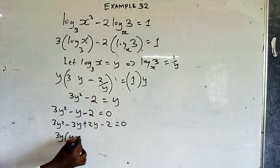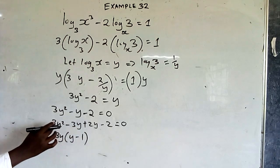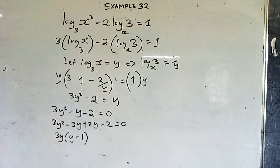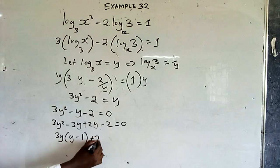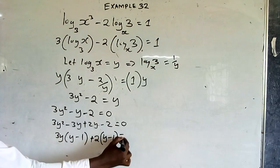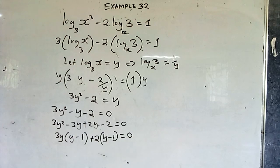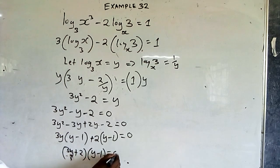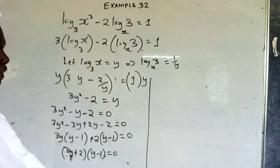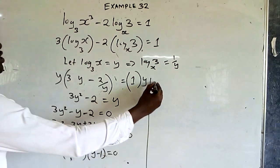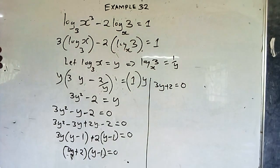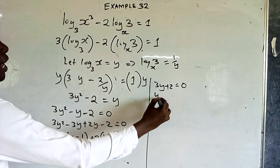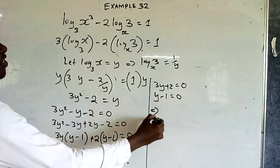Factorizing by grouping: the first two terms give 3y(y minus 1), and the last two terms give 2(y minus 1). So the factored form is (3y + 2)(y minus 1) equals 0.